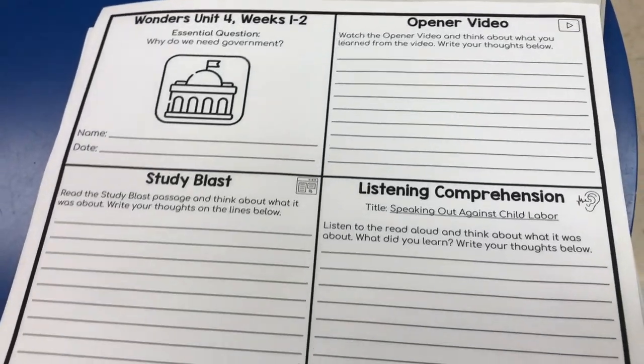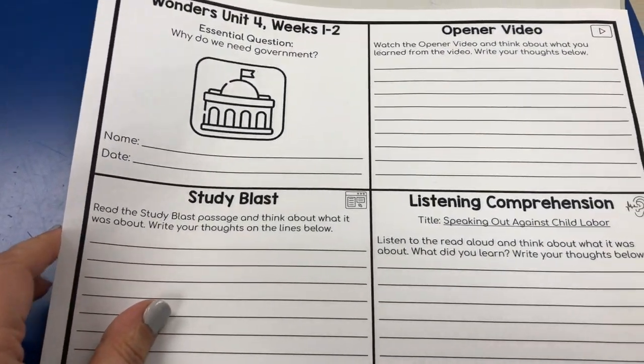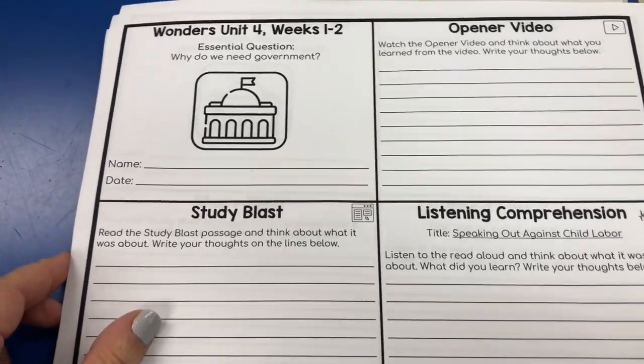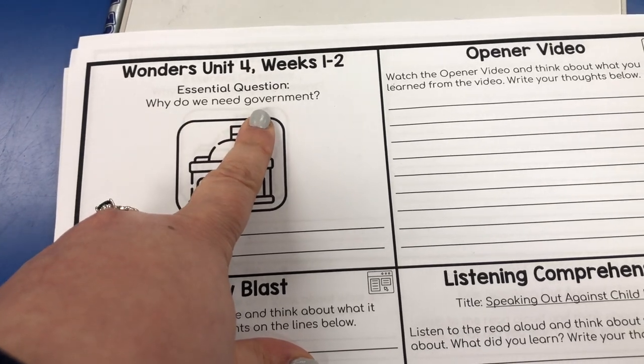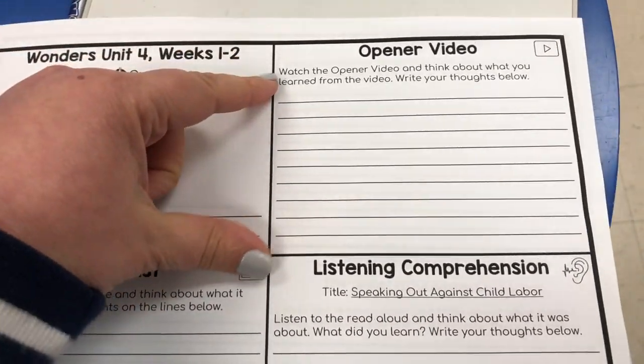My students this morning — my block one, my advanced learners — started the morning by making progress on the introduction to their GM Foods argumentative essay. After they had time to do that, and after a fire drill, we went ahead and introduced a new unit: Wonders Unit 4, Weeks 1 and 2. I created a sheet for students to reflect on each component when we introduce a lesson or unit. The essential question is: why do we need government? Then we watched the opener video.